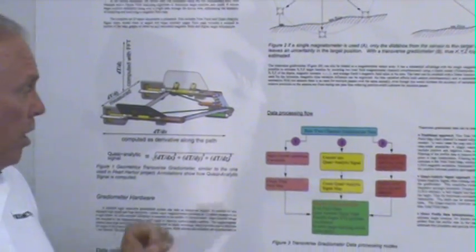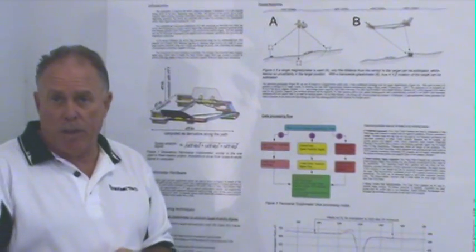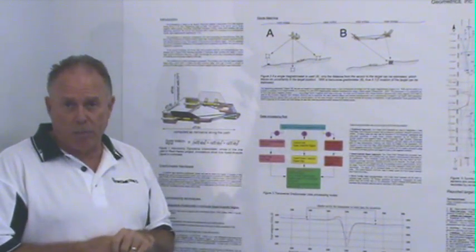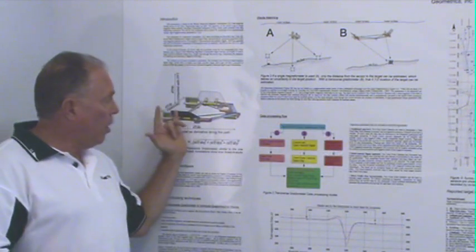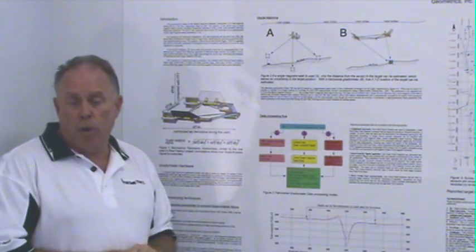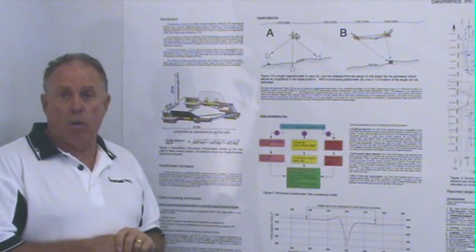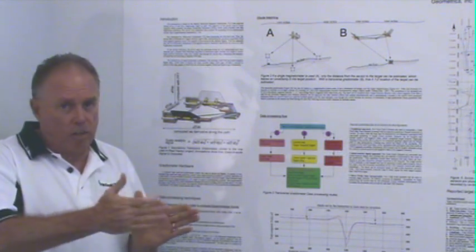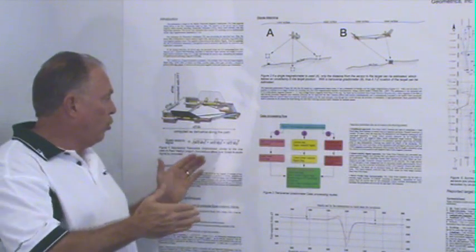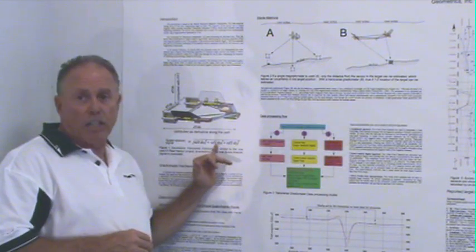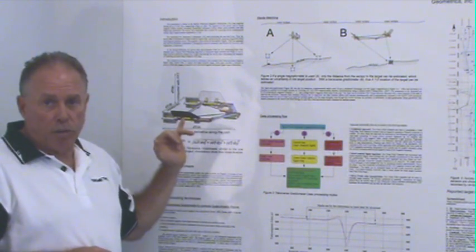What we measure, of course, is the transverse gradient. We have two sensors separated by 1.8 meters. We measure that at 10 times a second. We are also dragging the array through the water along a track, so we use the time gradient, the longitudinal gradient, to compute the second term.